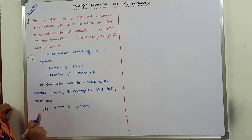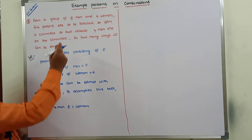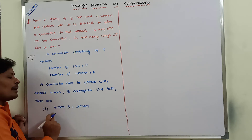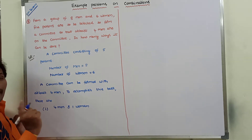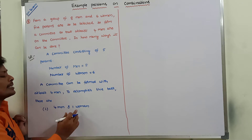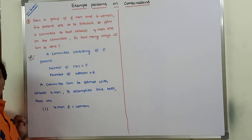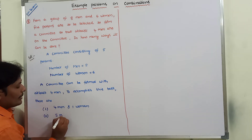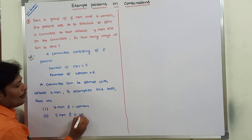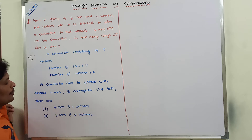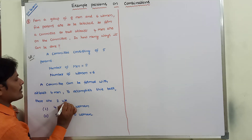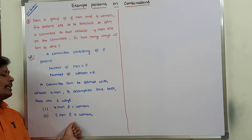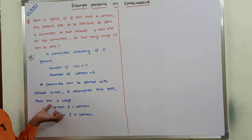At least four men means compulsory we are considering four men. The second possibility is five men and zero women. So there are only two possibilities: first, four men and one woman; and second, five men and zero women. These are the two cases to form a committee of five members with at least four men.